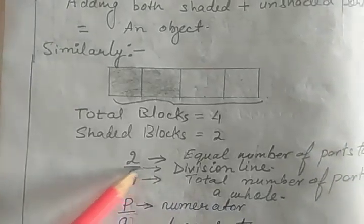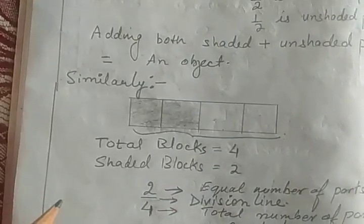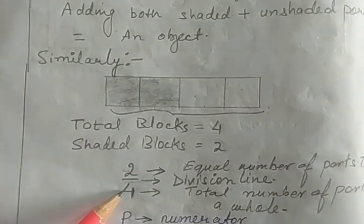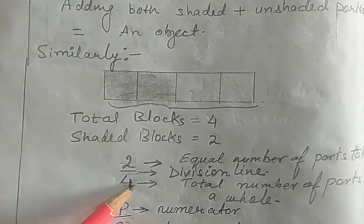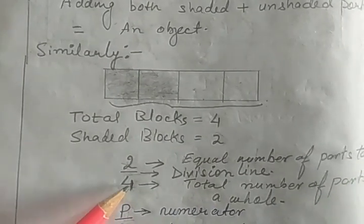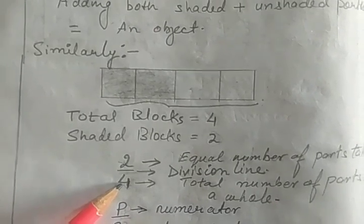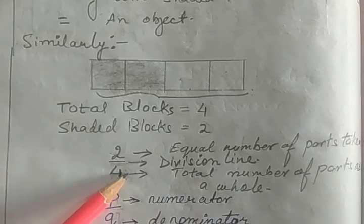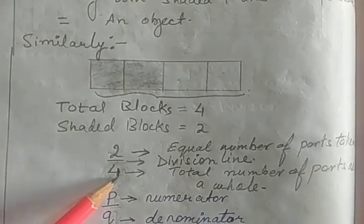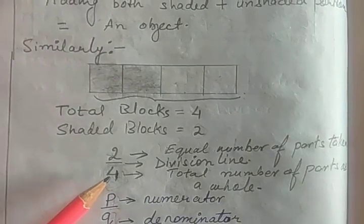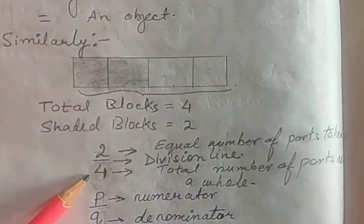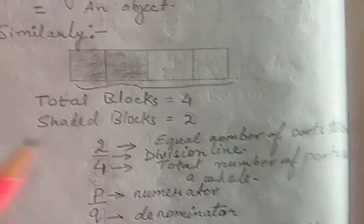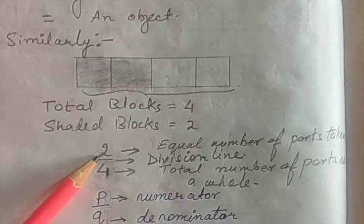The division line between numerator and denominator — the upper part we say as numerator, and the down part we represent as denominator. The denominator should not be equal to 0, because if the denominator is 0, then the fraction is undefined or it has no meaning.